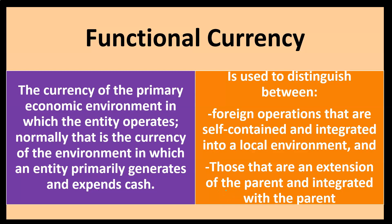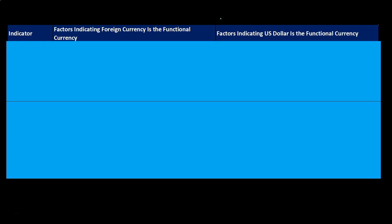If the foreign operation is an extension of the parent and integrated with the parent, and the U.S. dollar is the parent company's primary currency, you would think they're extensions of the parent even though they're in a foreign country. We'll go through a chart with indicators — factors indicating foreign currency is the functional currency versus factors indicating U.S. dollar is the functional currency. We're imagining a large company with a subsidiary in another country, trying to determine whether the functional currency is the local currency — say the pound in London or the peso in Mexico — or the U.S. dollar.